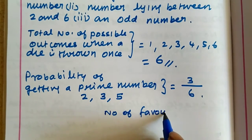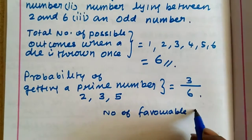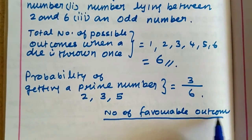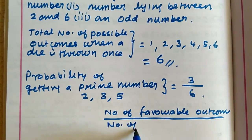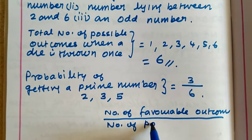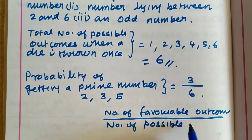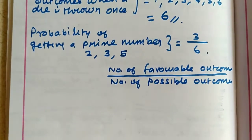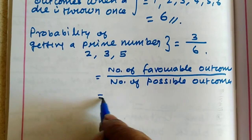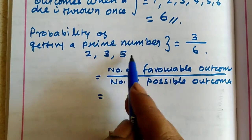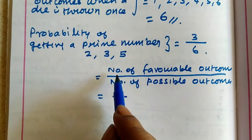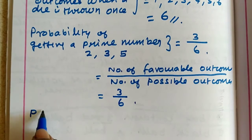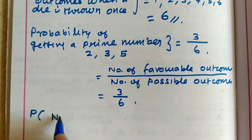Number of favorable outcomes divided by total number of possible outcomes. The prime numbers are 2, 3, 5 — so the probability of getting a prime number is 3 by 6.